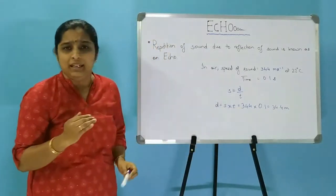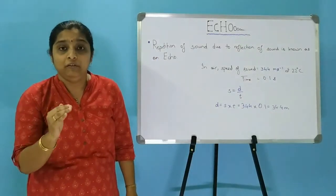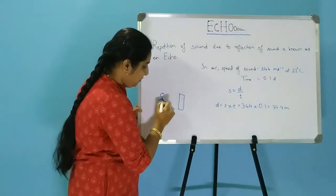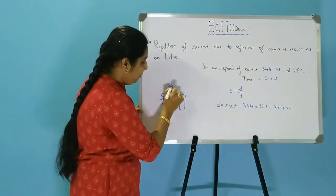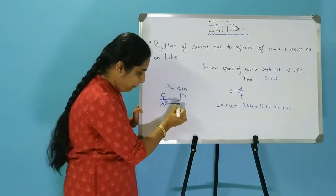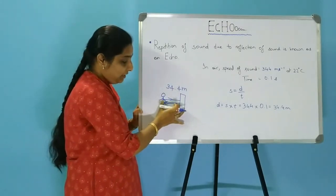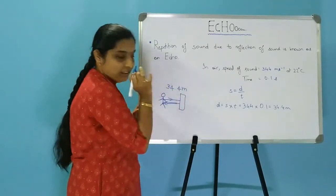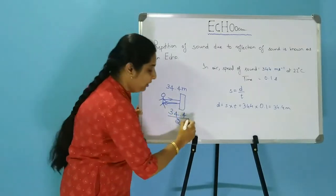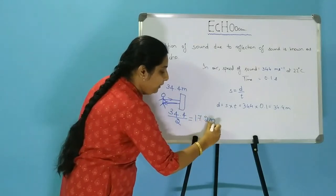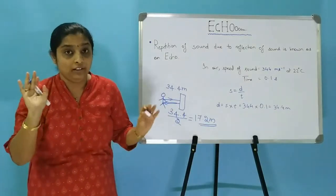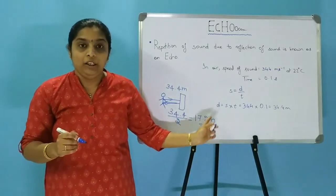The minimum total distance for a distinct echo is 34.4 meters. But since the sound has to travel to the obstacle and bounce back, the actual one-way distance is 34.4 divided by 2, which equals 17.2 meters. So the minimum distance at which an object should be placed for a distinct echo to be heard is 17.2 meters.